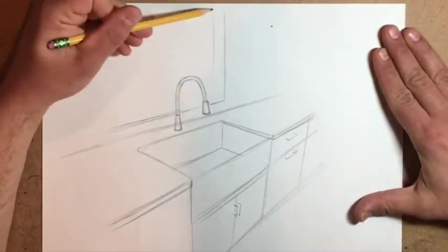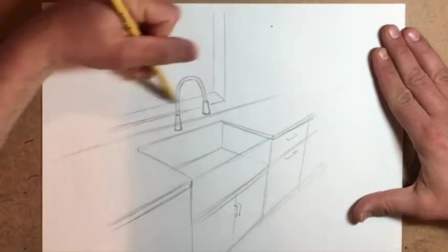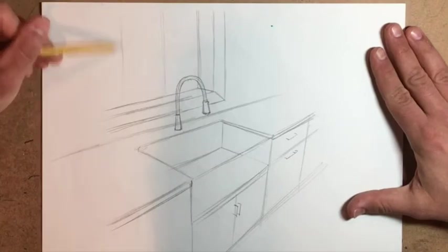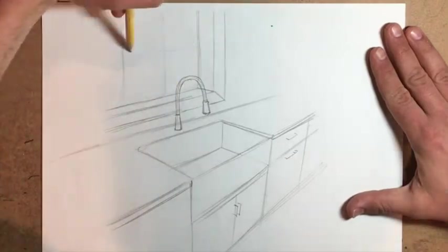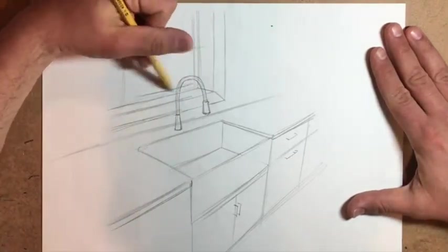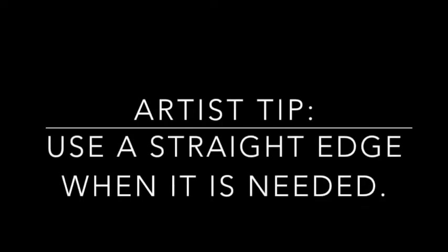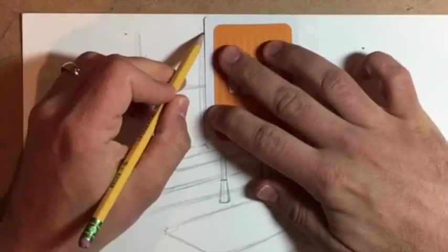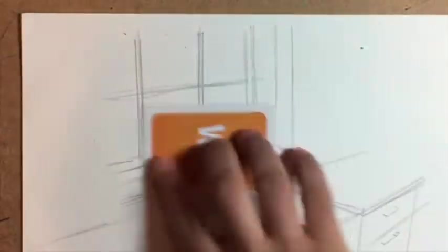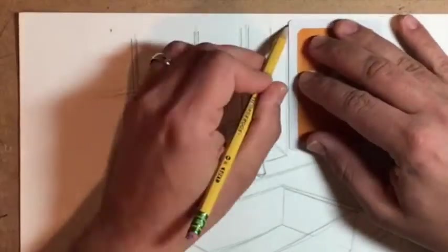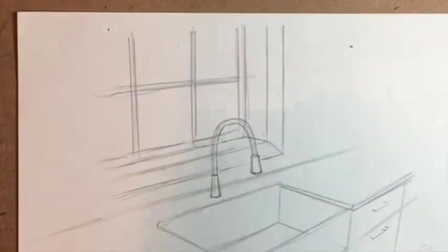I'm going to do the same thing with the window here — break that down into basic rectangular shapes to get a three-dimensional look. A couple things to note: you've got to use what you have at home. So if I need a straight edge and I don't have a ruler, I'm going to take a card from a game called War that my daughters and I play. That's going to help me make sure I get nice, clean, continuous lines.